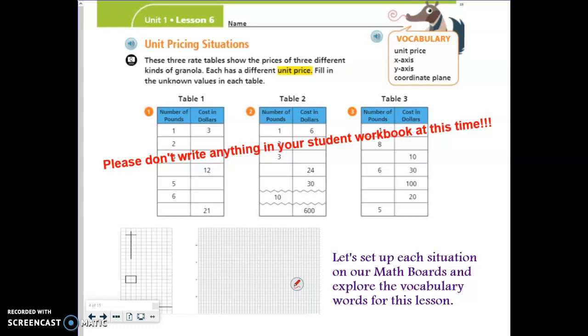Okay, so we are trying to first establish what is the unit price of these three types of granola, and then how can I use that knowledge to fill in the rest of the table and eventually graph that information to give me what I might deem to be the best deal in that scenario. The other three terms listed in the vocabulary in the upper right-hand corner are x-axis, y-axis, and coordinate plane, and those are all graphing terms, and we will get and talk more about them as we continue on with the lesson. Okay, so we're not going to worry about those for right now.